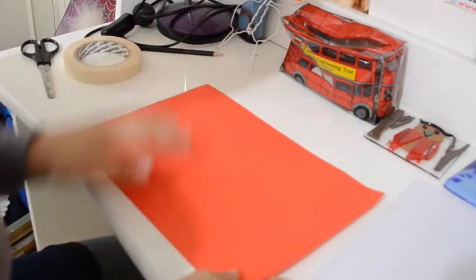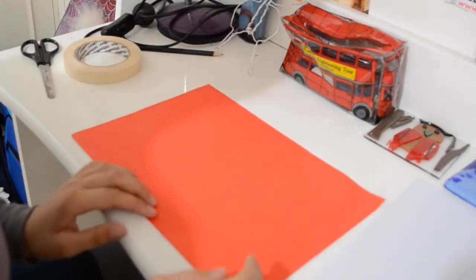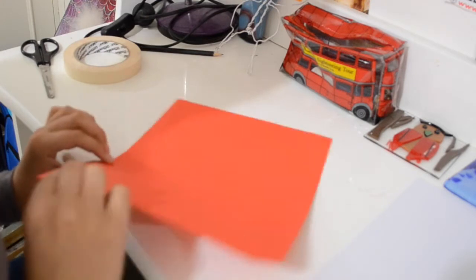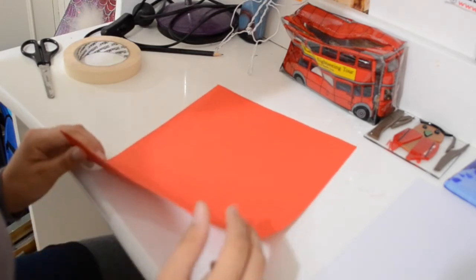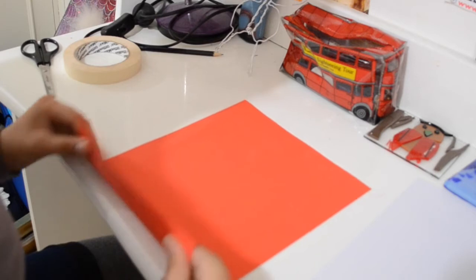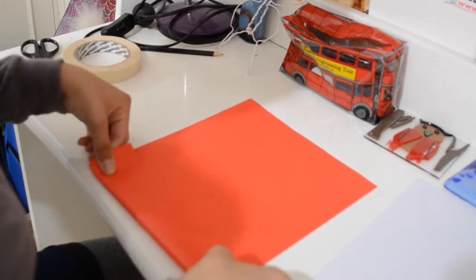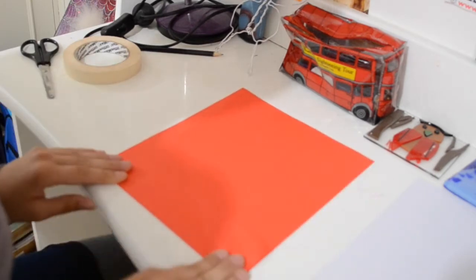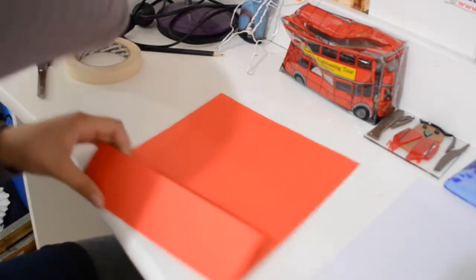With your red piece of paper, you're going to need to cut it down into a rectangle. Depending on how big you want it, you can choose how much you want to cut off your red piece of paper. I'm going to make a medium sized one.